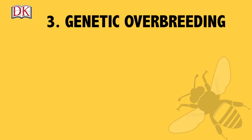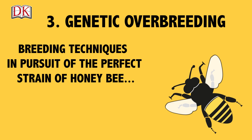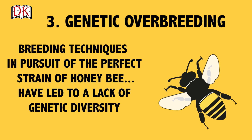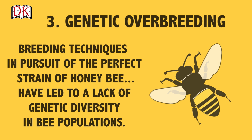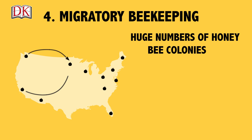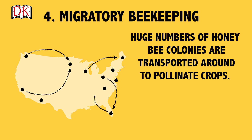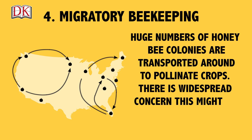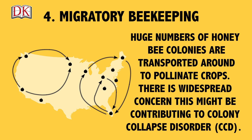Genetic overbreeding to obtain the perfect strain of honeybee has led to a lack of genetic diversity in bee populations. Another cause of bee decline is migratory beekeeping, where huge numbers of honeybee colonies are transported around to pollinate crops. There is widespread concern this might be contributing to colony collapse disorder, or CCD.